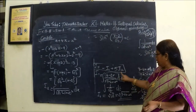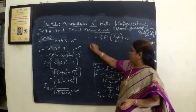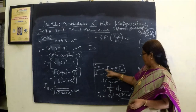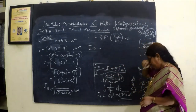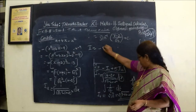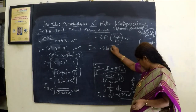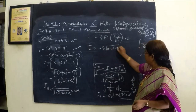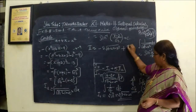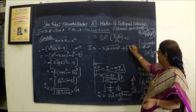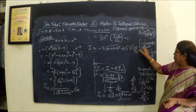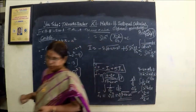Now in this step we substitute. Therefore I equals minus 2 root of 9 minus 4x minus x squared, and then 5 into sin inverse of x by A plus C. The answer is correct.